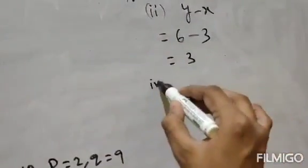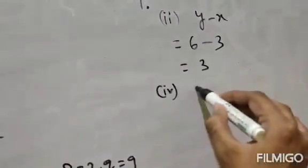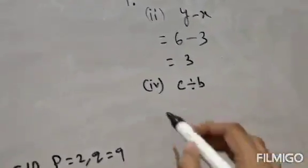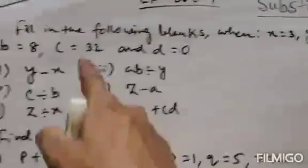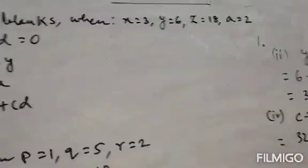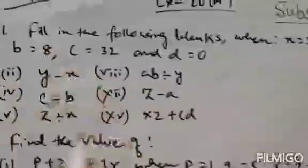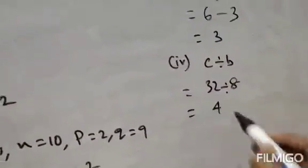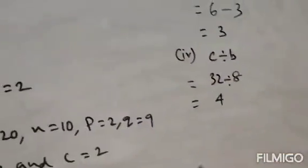Question number 4 is c divided by b. The value of c is 32, and the value of b is 8, so 32 divided by 8 equals 4.